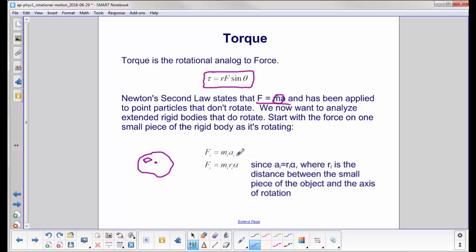Then we substitute in the angular acceleration, where A sub i equals R sub i alpha, and R sub i is going to be this distance here, the distance between this little piece of mass and the axis of rotation.